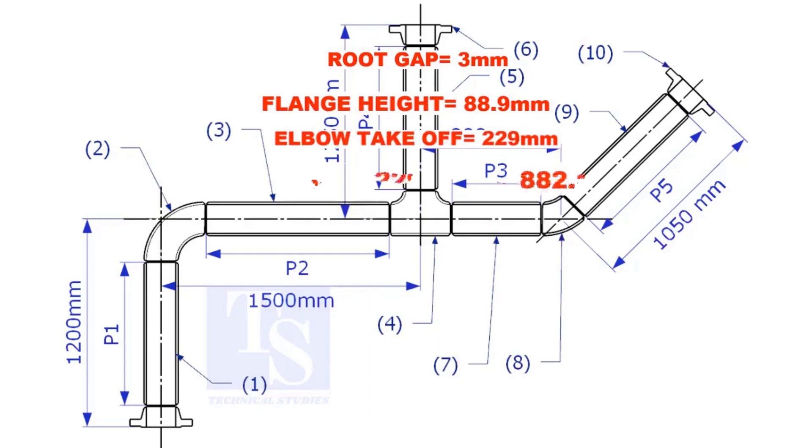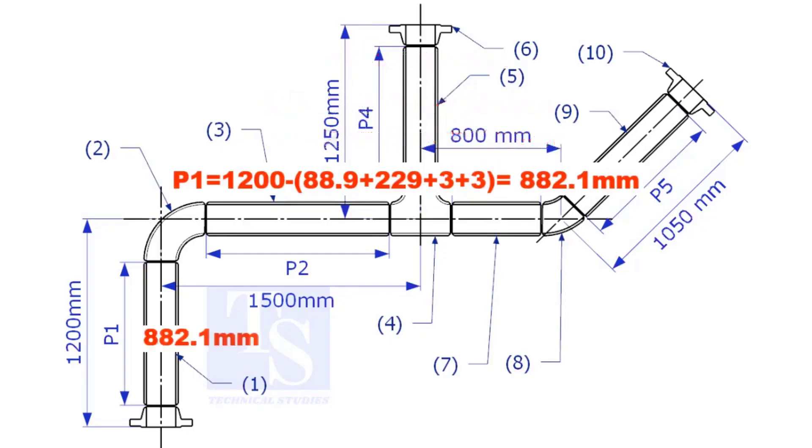Substitute the sum of the height of the flange, elbow takeoff, and two root gaps from the total length of 1500. Length of pipe P1 is 882.1mm.